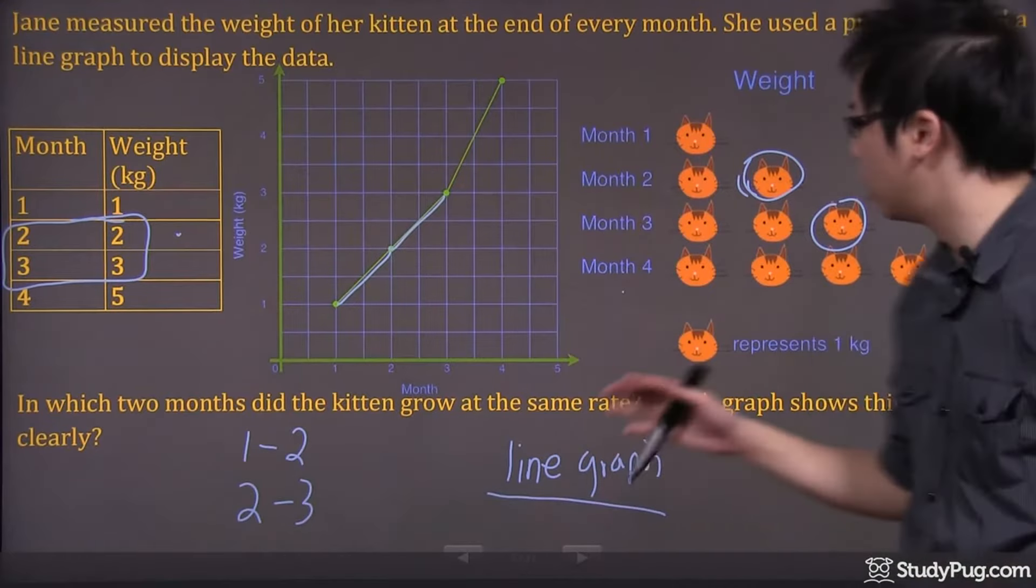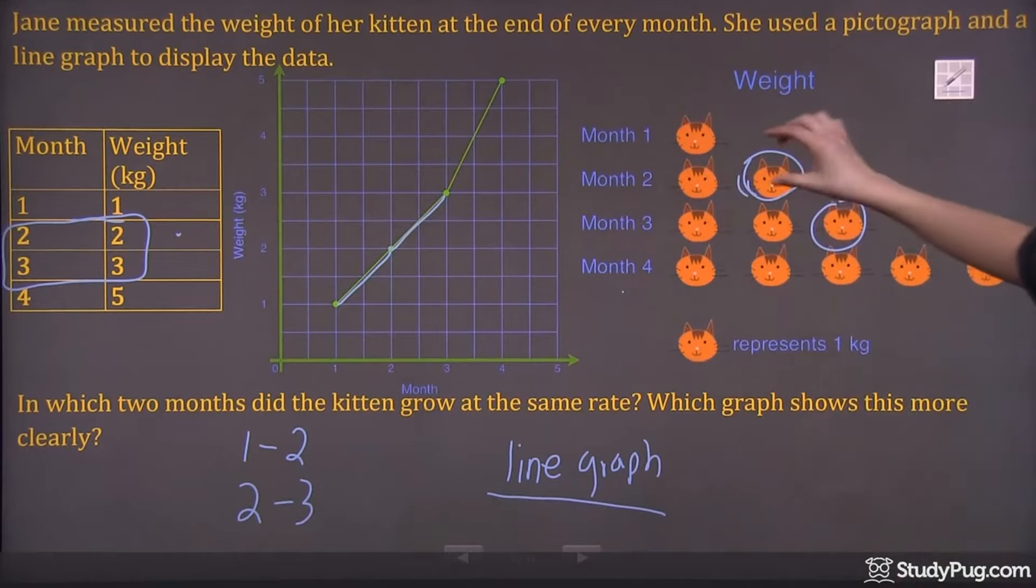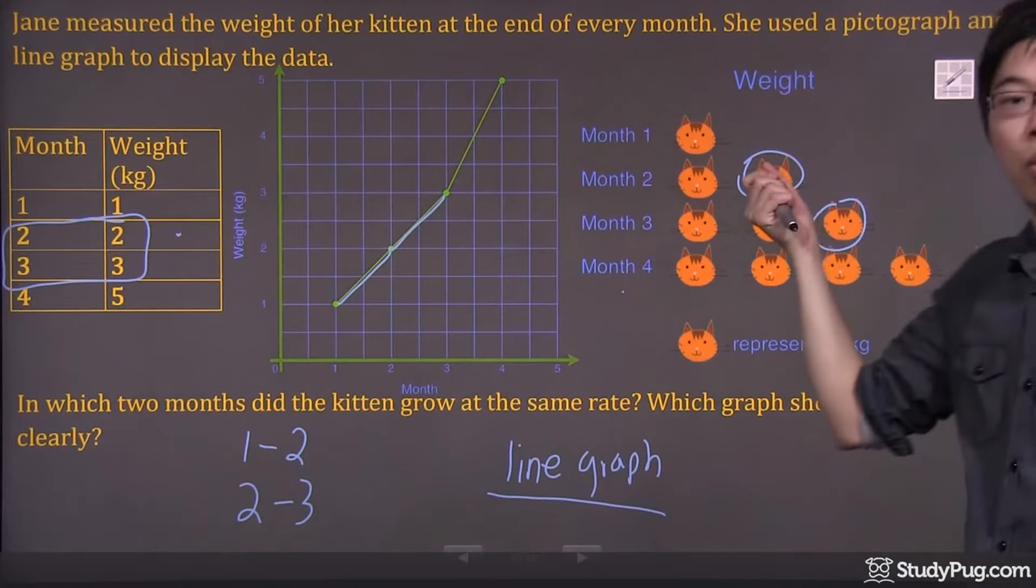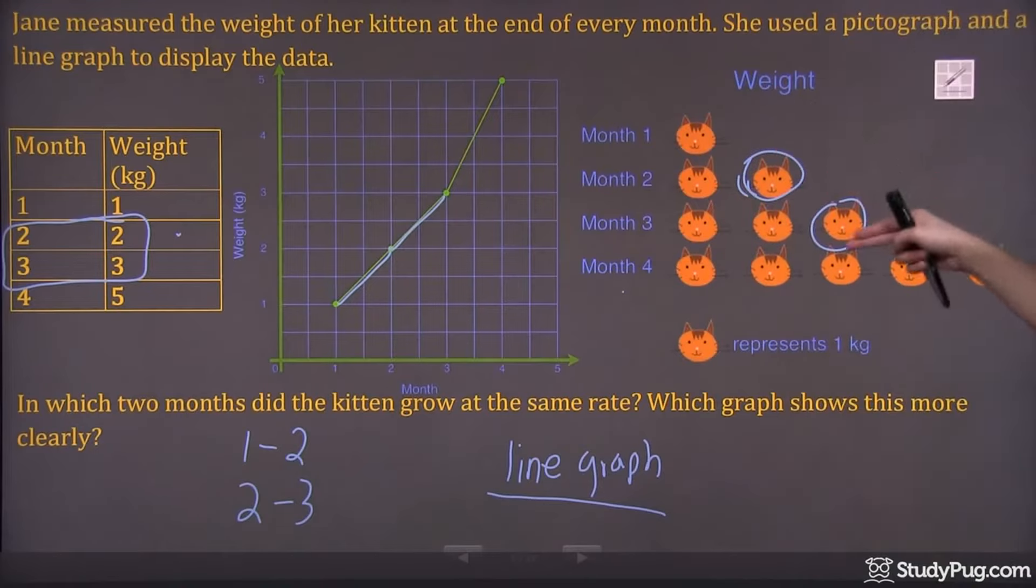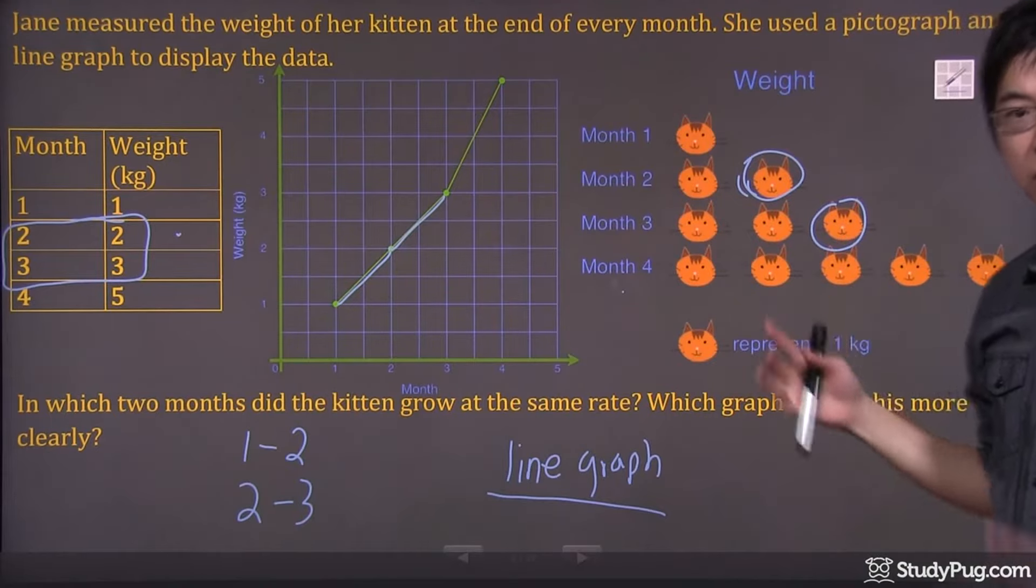It's not wrong to pick the pictograph because I can see that the drawing of the kitten, from month one to month two you get one extra, and from two to three you also get another kitten head.